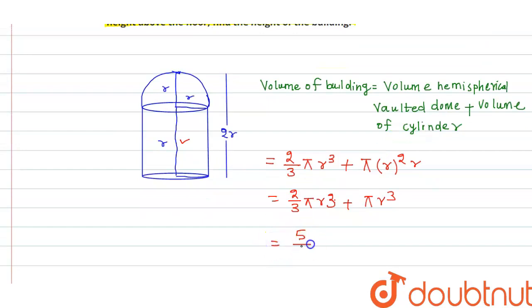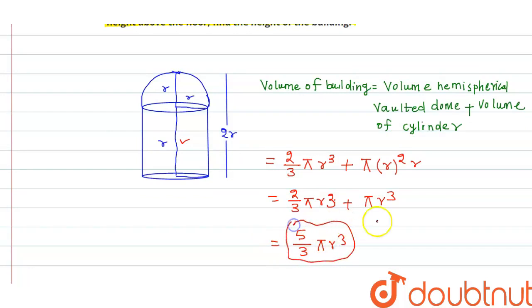After adding these together, we get 5/3 π r³. This total volume equals the volume of air in the building.